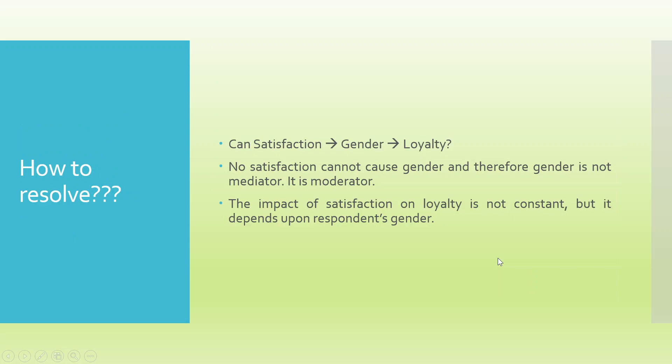How do we resolve which is mediation and what is moderation? Just imagine there is a path where we want to say that satisfaction is affecting gender, and gender is affecting loyalty. Now, do you think that satisfaction can change the gender? No, it cannot change. So satisfaction cannot cause gender, and therefore gender is not the mediator. Very simply, gender is to be used as a moderator.